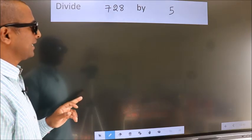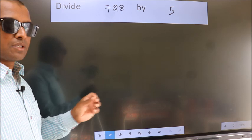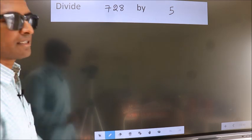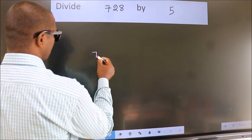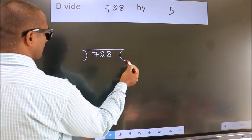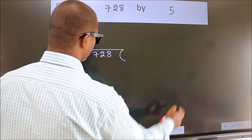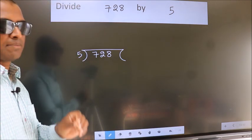Divide 728 by 5. To do this division, we should frame it in this way: 728 here, 5 here. This is your step 1.